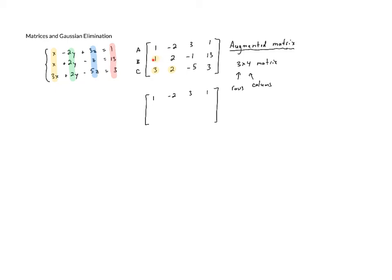So for the second row, to get rid of this 1, we can replace row B with B minus A. If we do that, then we have 1 minus 1, which is 0. We've got 2 minus negative 2, which is the same as 2 plus 2, which is 4. We've got negative 1 minus 3, which is negative 4. And we've got 13 minus 1, which is 12.